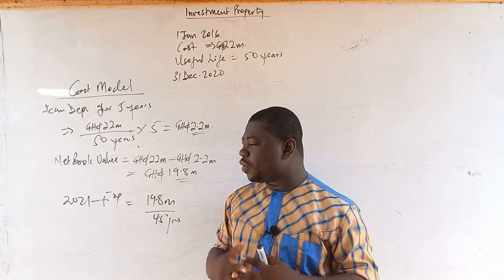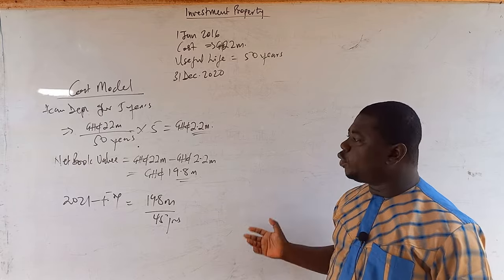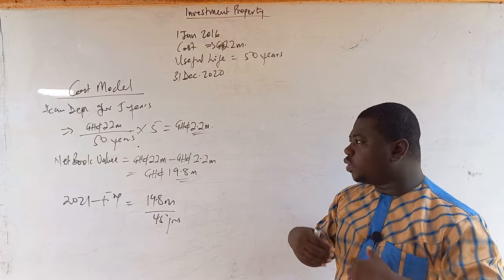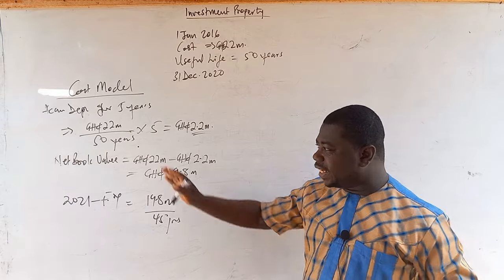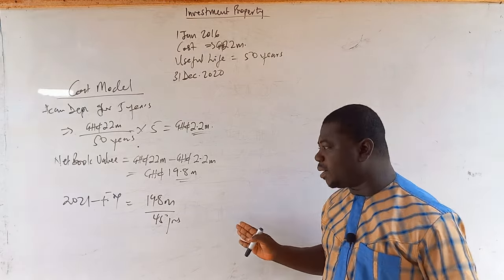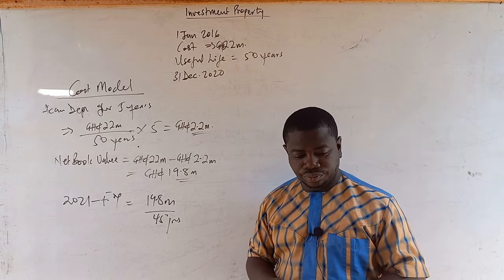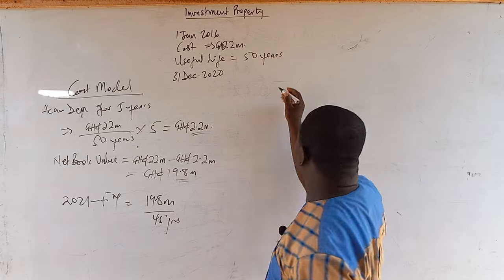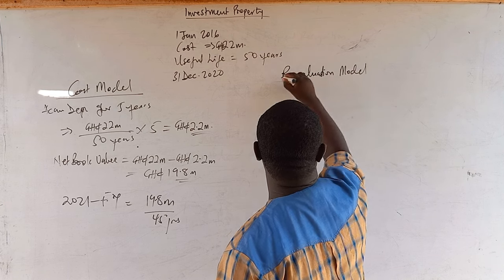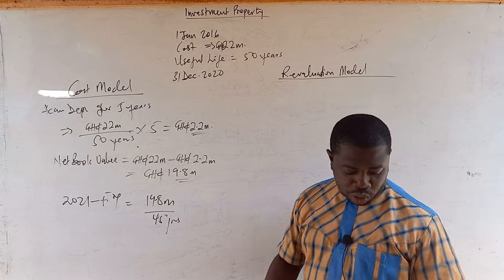So from the 2021 financial year, we depreciate 19.8 million over 45 years and it is recognized in the financial statement as an investment property, having reclassified it from IAS 16 into IAS 40. That is how to go about the cost model. In standards questions you have to write English in addition to calculations, conveying advice to the company on how they should treat it going forward.